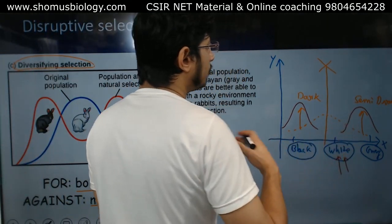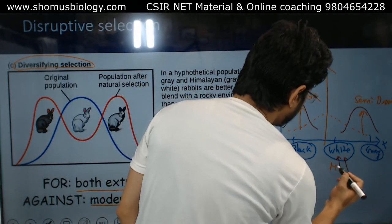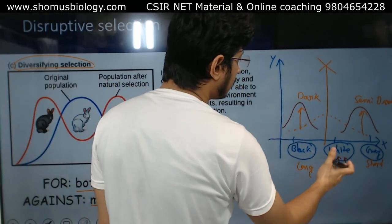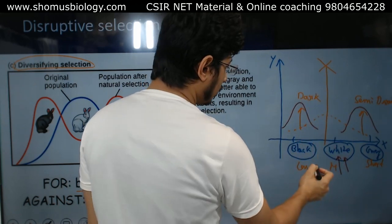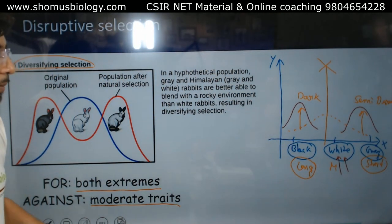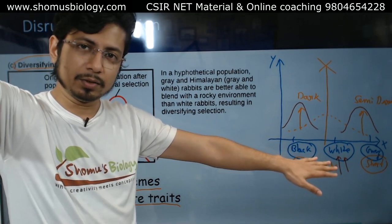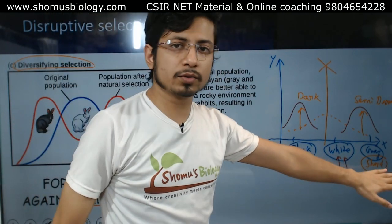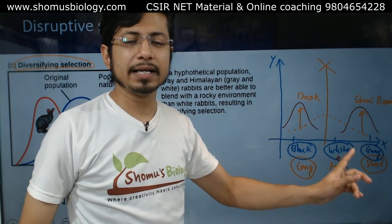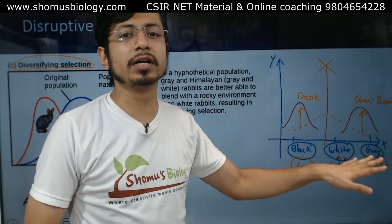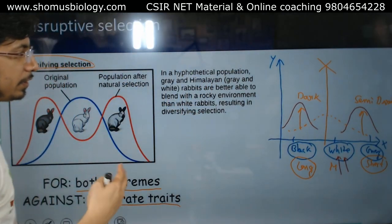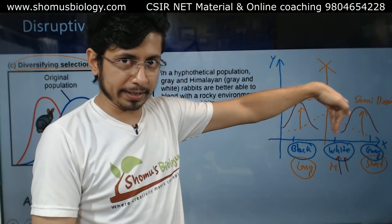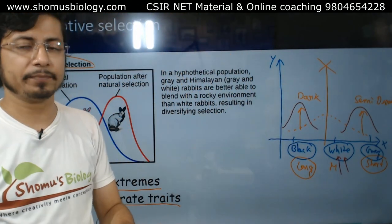In squirrels, there are individuals with moderate-sized tails, long tails, and short tails. The moderate-length tail squirrels are not selected by nature. Long-tail squirrels and short-tail squirrels are selected. Long-tail squirrels can use their tails to hang in trees and rest, while short-tail squirrels can run very fast. The moderate-tailed squirrel can neither run very fast nor use its tail to hang in trees, making it easy prey for predators. So again, two different extremities are selected, disrupting the moderate character.